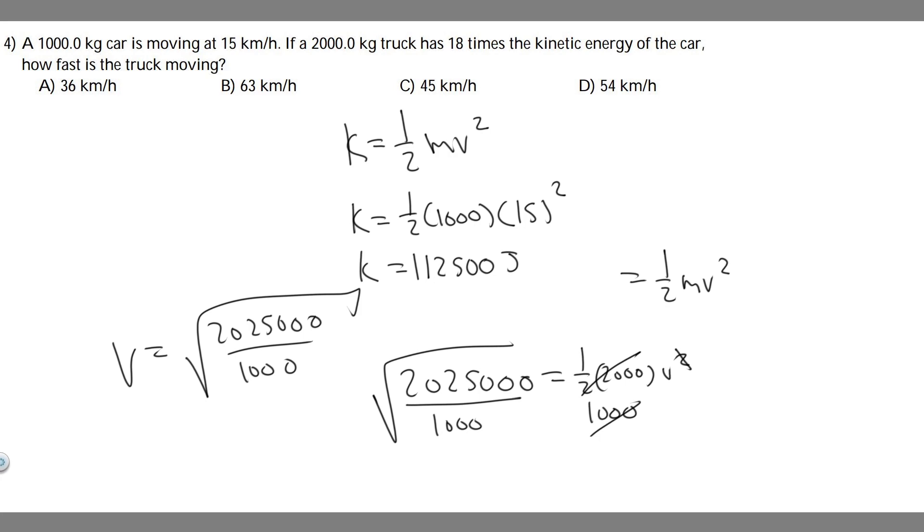Go ahead and plug this in. When you do that, you're going to find v equals 45. Our units for velocity in this case was kilometers per hour. So 45 kilometers per hour is your answer.